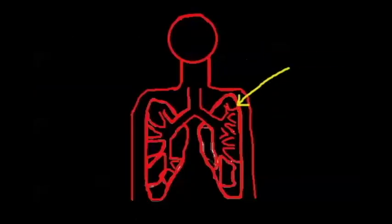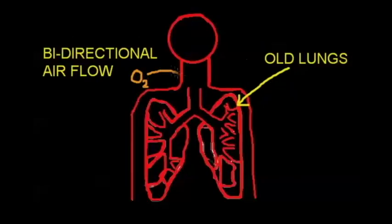Your old human lungs use outdated bi-directional air flow where air moves in and out of the same compartment.